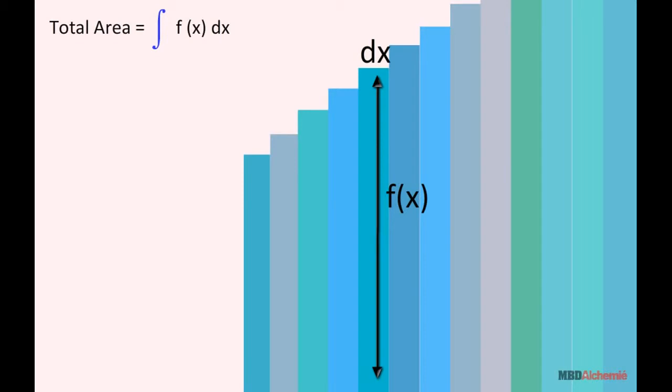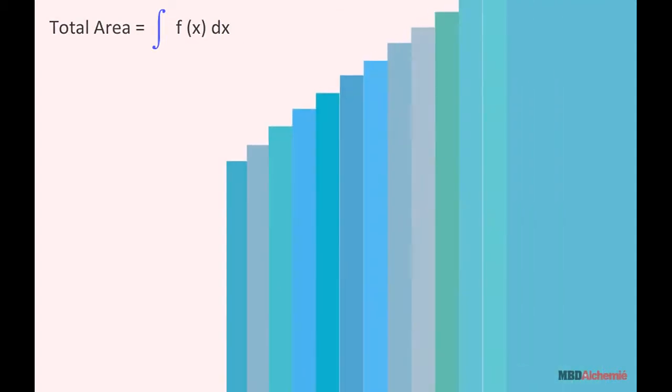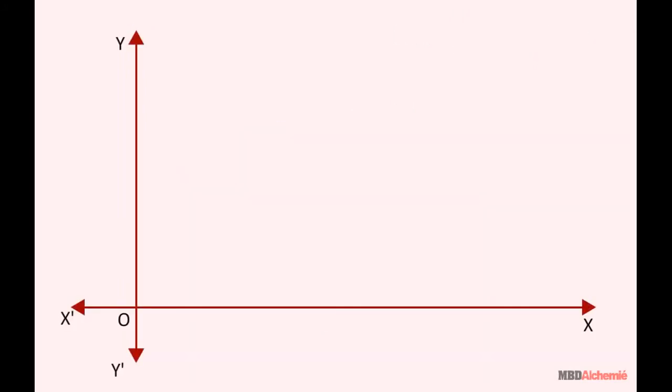Since dx is very small length, we use the integral sign for sum of all the areas. Therefore, under the limits a to b, the area is the definite integral from a to b of f(x) dx.